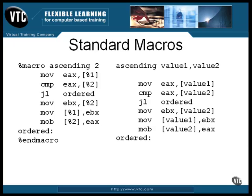This macro can only be used once in a program because it defines a label named 'ordered.' What you need to fix it is the ability to define a label that is local to each expansion of the macro. Here's how you do that: if you specify the label name beginning with two percent signs, it becomes a local label defined locally inside the expanded macro. I don't know of any reason to define labels inside macros any other way. Doing it this way, you can use the same macro as often as you like with no collision on the labels.